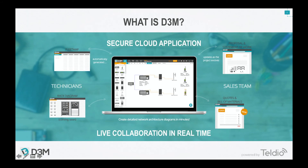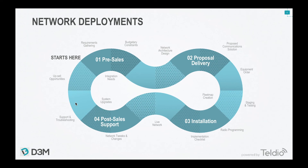You know the deployment phases better than I do — pre-sales, proposal delivery, installation, and post-sales support. Our goal at D3M is to help you with all these stages. By adding the rack diagram feature, we can help at the network architecture design phase, the proposed communication solution stage when sending a delivery proposal to your customer, and during the install.